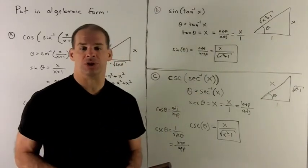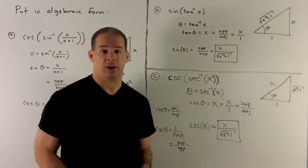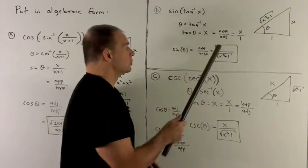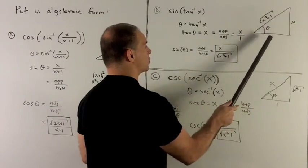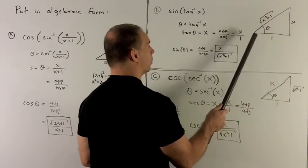If you're worried about what should go on the bottom, just remember x is equal to x over 1. And now I can fill in a right triangle. So our opposite is x. Our adjacent is 1. So the hypotenuse is just going to be the sum of the squares, square root.